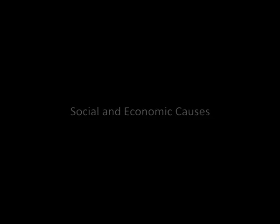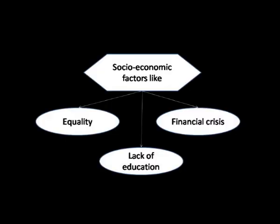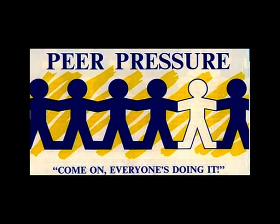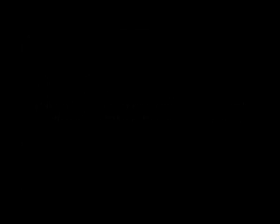Social and economic causes: the peer group can influence a person to commit crime. Social and economic factors like inequality, lack of education, and financial crisis can provoke a person to steal or commit other crimes. Peer pressure along with greed for material wealth also influences a person toward crime. Over the years, corruption has increased and is now seen in all spheres of daily life. The unhealthy link between politics, criminals, and bureaucracy often leads to corruption.